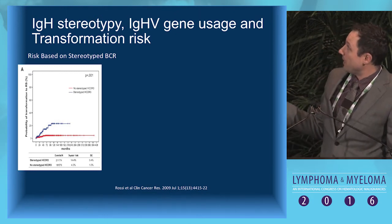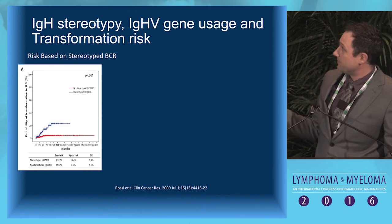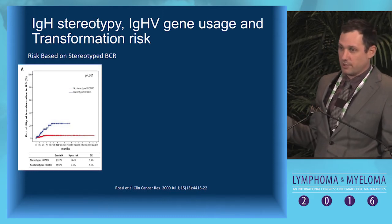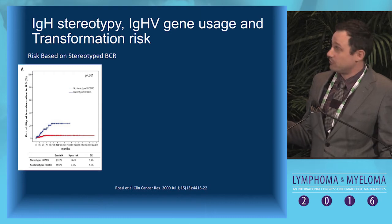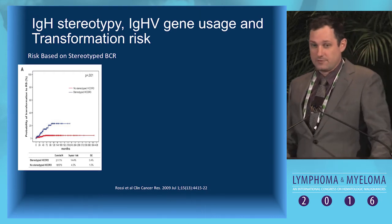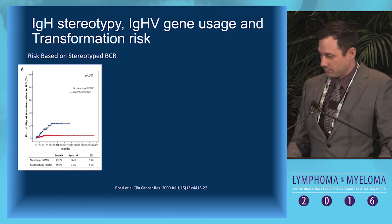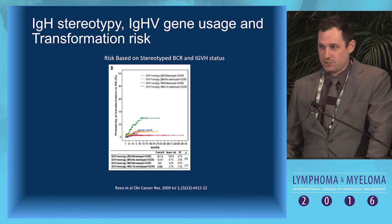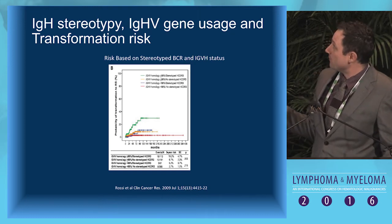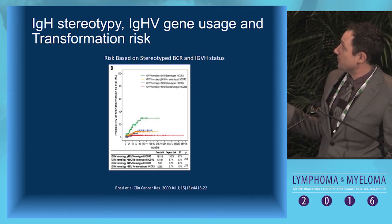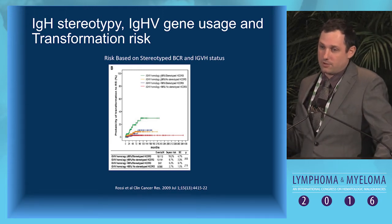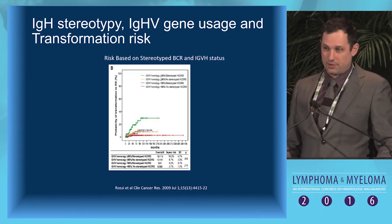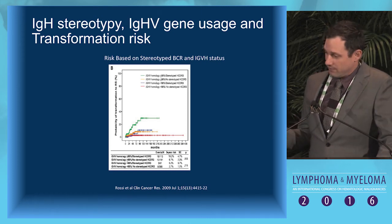These stereotype B-cell receptors — common to a potential antigen — provide evidence that auto-stimulation in the microenvironment or autonomous signaling can lead to CLL development and continued activation toward transformation. Patients with stereotype B-cell receptors (shown in blue) approach about 15 to 20% Richter's transformation risk at five years. When you add unmutated IGHV status, risk increases further, stratifying based on whether you're unmutated or stereotyped — and if both, it pushes up to 30 to 40% in the five-to-six year range.